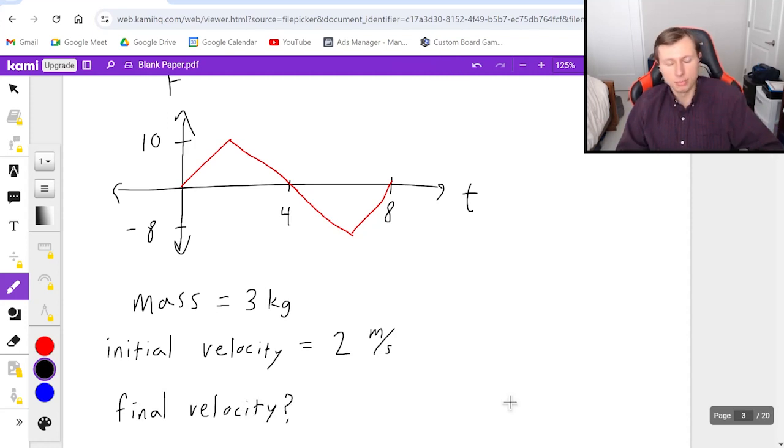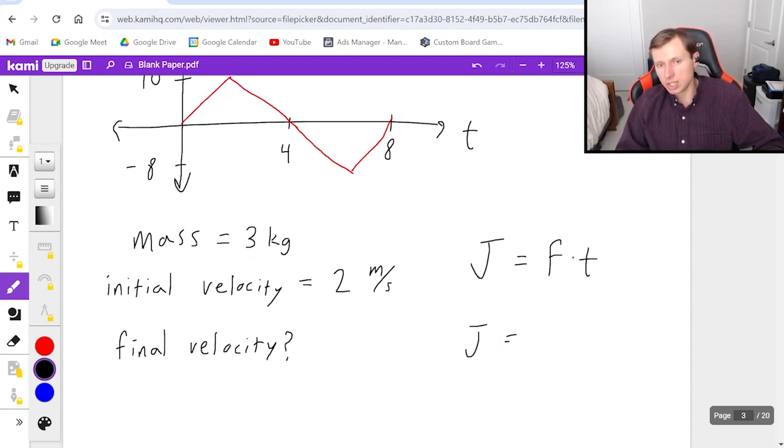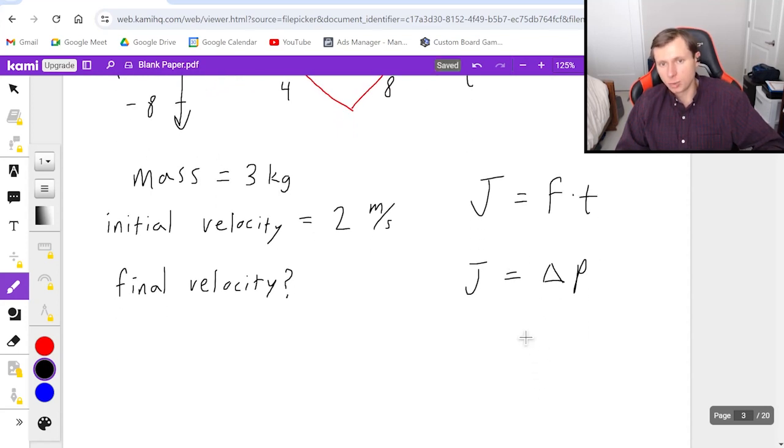So this is a pretty tough question, but we're going to do the same idea, just we have a new equation that we're going to have. And that equation is impulse J equals force times time. But remember that J, impulse, is also equal to delta P, change in momentum. In other words, P final minus P initial, momentum final minus momentum initial.